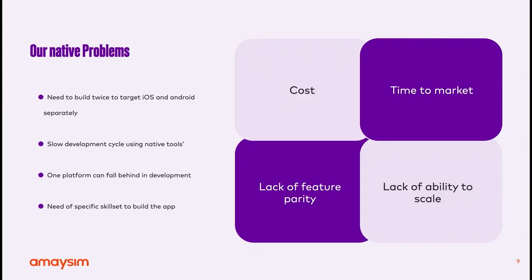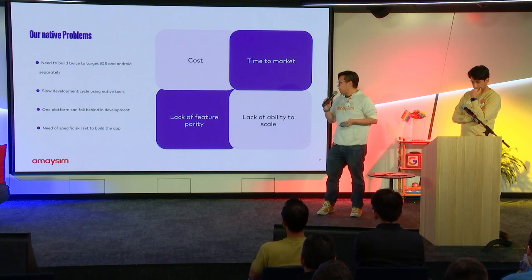As a result, there were problems. We had targets, but there were problems as well. The biggest issue with native was cost and time to market — we needed to build twice for iOS and Android. iOS and Android required different skill sets in developers, so we brought in contractors and external companies to help. It was a headache.